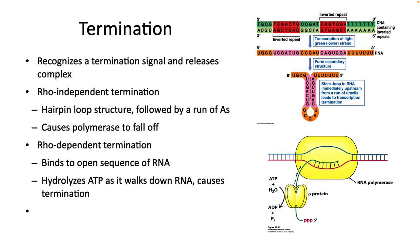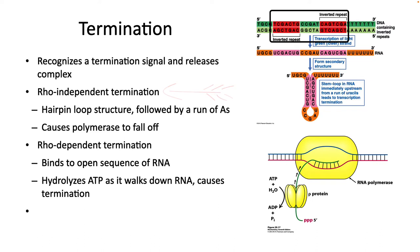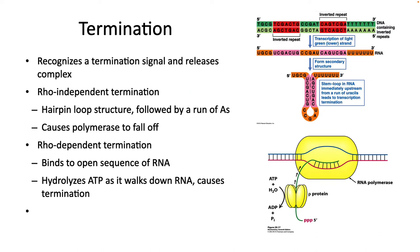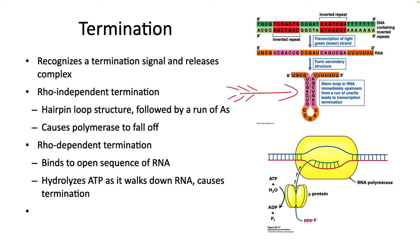Termination in bacteria can occur in two ways. In Rho-independent termination, there is a terminator sequence — a DNA sequence that encodes an inverted repeat that can hybridize with itself — followed by a long run of A's. When RNA polymerase transcribes the terminator into RNA, a hairpin loop forms, and this secondary structure will destabilize the RNA polymerase-DNA complex. The run of U's weakly interacts with the DNA template, and thus the RNA falls off.